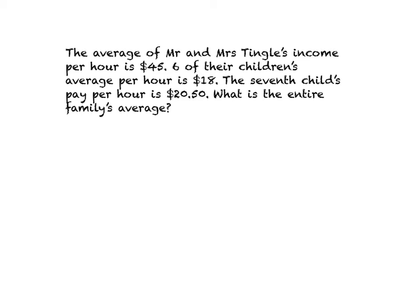So the first thing I'm going to do is just a quick add-up of Mr. and Mrs. Tingle's income per hour so that I can find their total. Because the way you make average is you do what they get per hour and then you add those two up and then you divide it by the number of things there are. But to get it back to their total, you just multiply it by two. So 45 times two is $90.